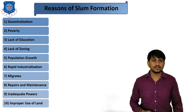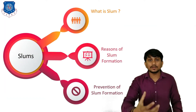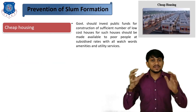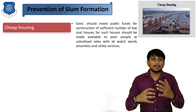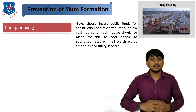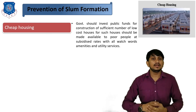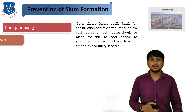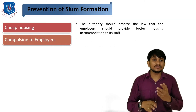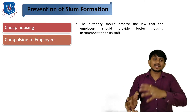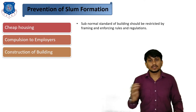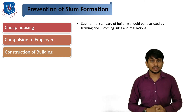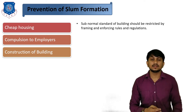These are the various reasons for slum formation. Now let's understand how you can prevent slum formation. First, by construction of cheap housing — government should invest public funds for construction of sufficient numbers of low-cost houses, which should be made available to poor people at subsidized rates with all amenities and utility services. Second is compulsion to employers — authorities should enforce laws that employers provide better housing to their staff. Third, subnormal standards of buildings should be restricted by framing and enforcing rules and regulations.